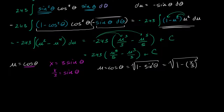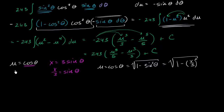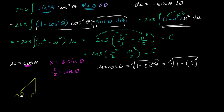There's another technique you might see in a calculus class. We know that u equals cosine theta and we want to express u in terms of x. We draw a right triangle. Since sine of theta equals x over 3, and sine is opposite over hypotenuse, we label the opposite side as x and the hypotenuse as 3. The sine of theta is then x over 3, matching our first substitution. To find cosine of theta, we need the adjacent side.